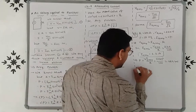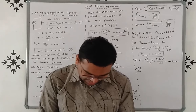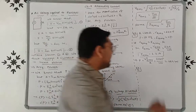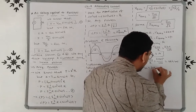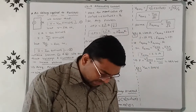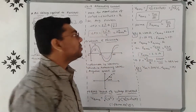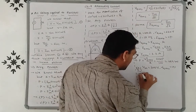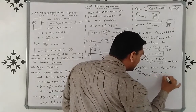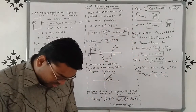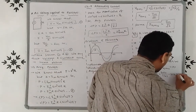Example 2: The peak voltage of an AC supply is 300 V, i.e., Vm = 300 V. What is the RMS voltage? We use the formula Vrms = Vm / √2 = 300 / 1.41 ≈ 212.0 V.